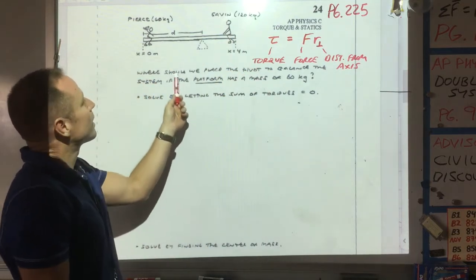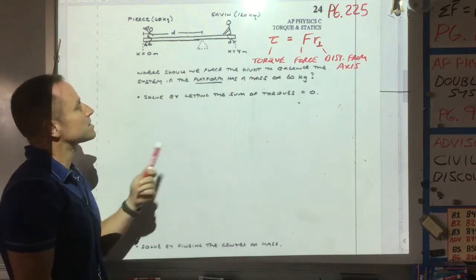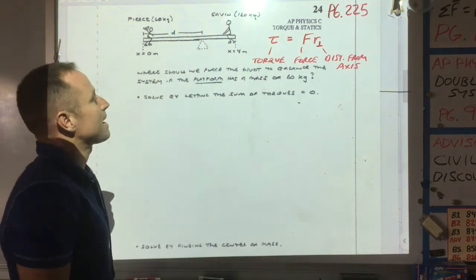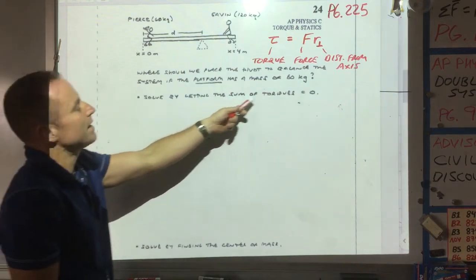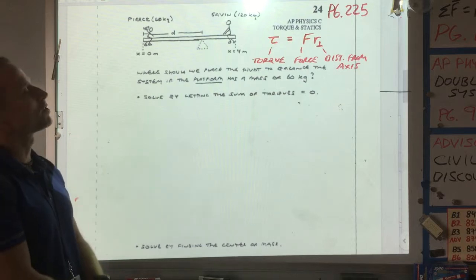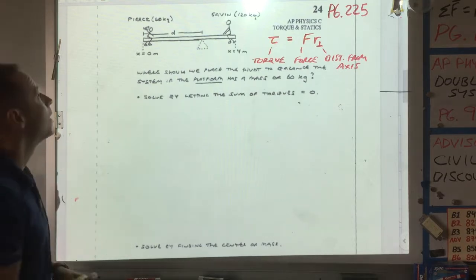And it says where should we place this pivot to balance the system if the platform, which is this plank, has a mass of 60 kilograms. What it's asked us to do is solve by letting the sum of what's called the torques go to zero.